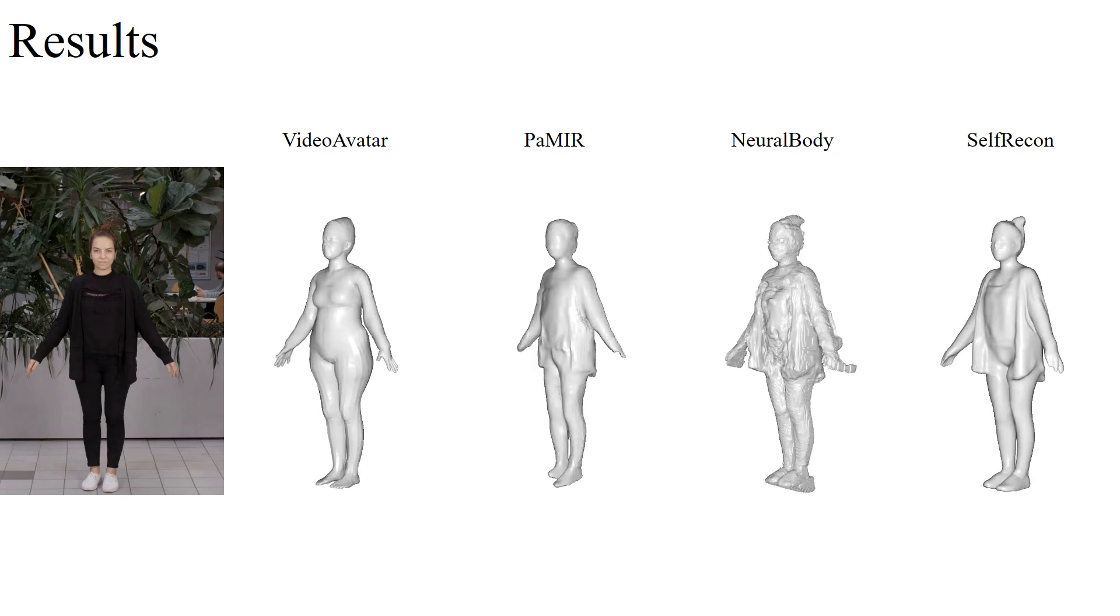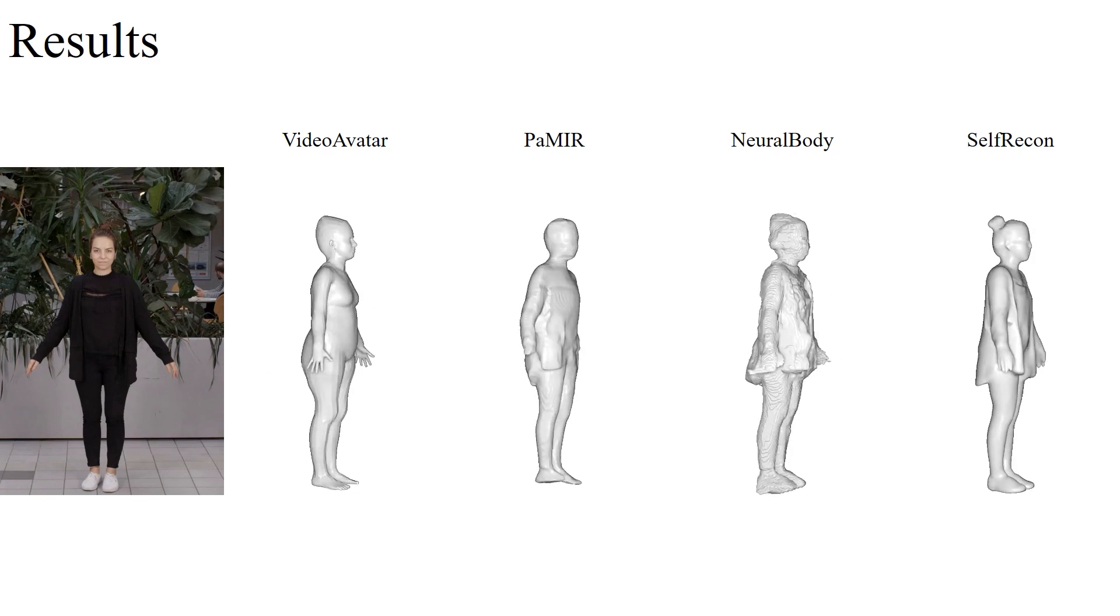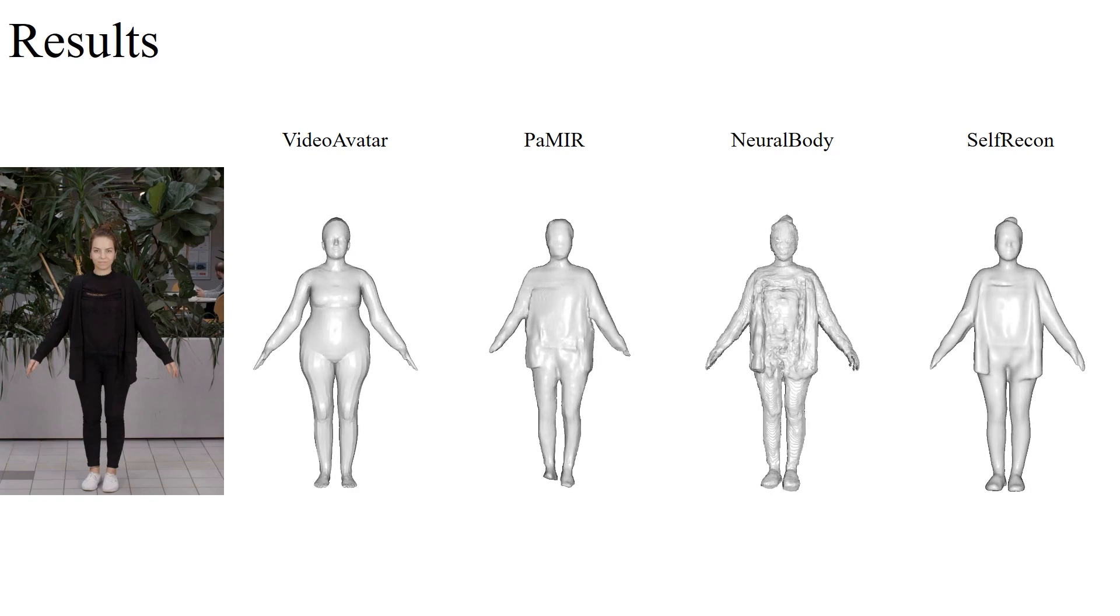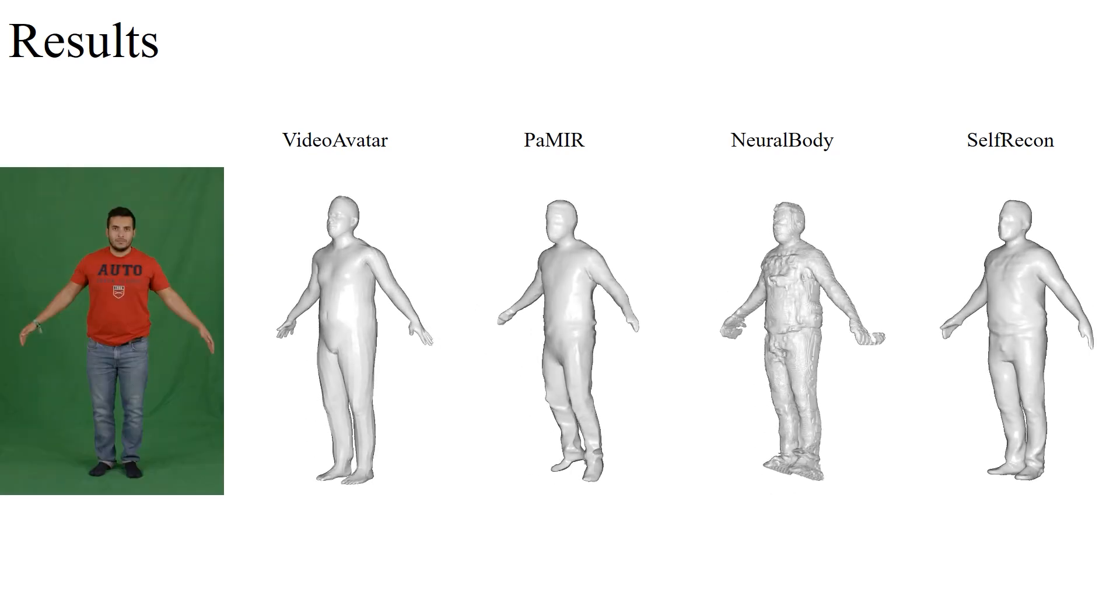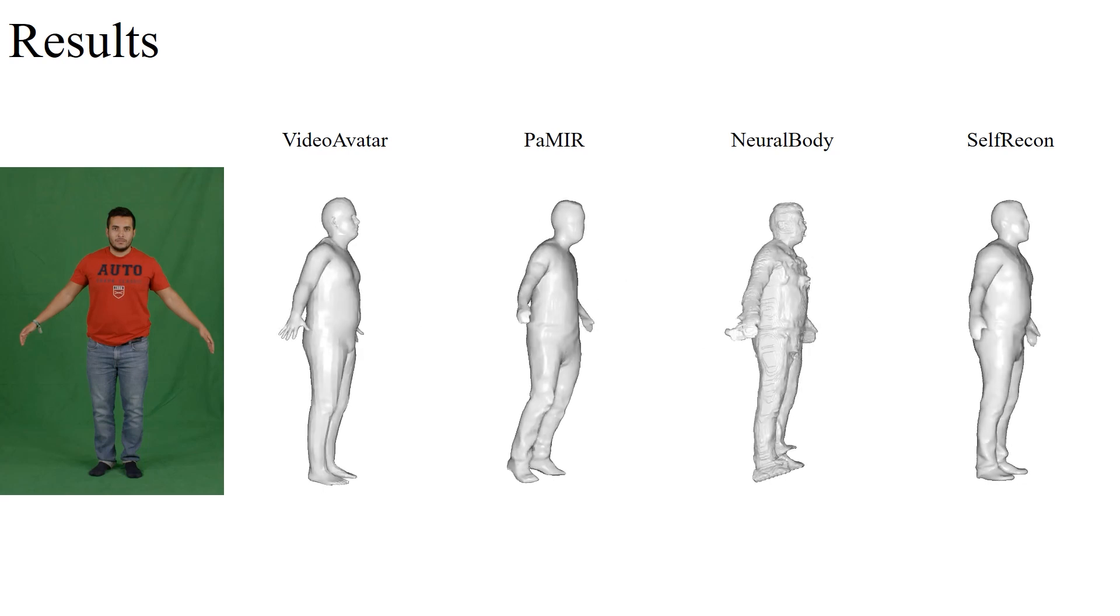Self-Recon also outperforms some model-free methods. Pamir uses multi-frame input to improve its results but still miss some features. And the results of neural body recover the overall shape while suffering from large noise.